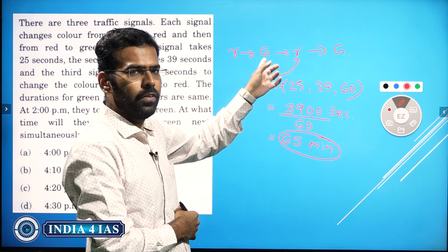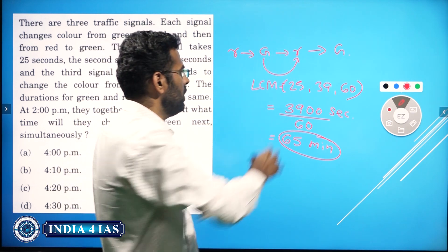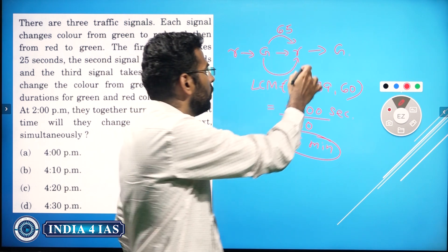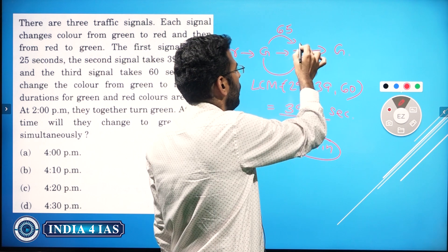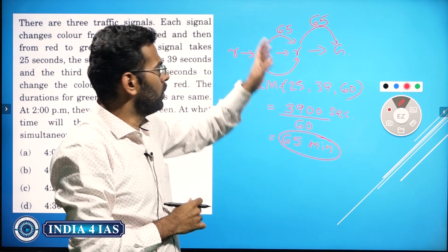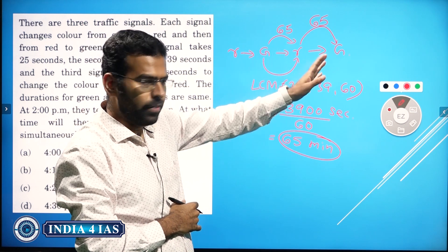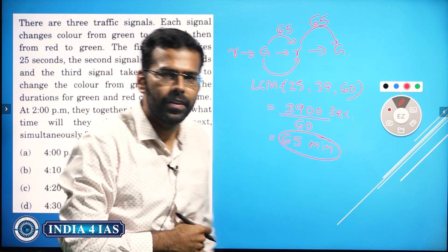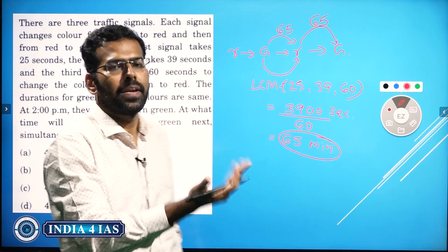They will turn from green to red in 65 minutes. Since the duration of red and green are the same, from red to green will also take 65 minutes. That means to turn again to green from green, it will take 65 plus 65 minutes, which is 130 minutes - that's 2 hours 10 minutes.